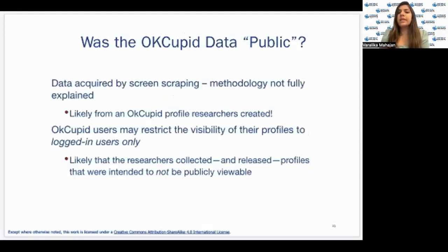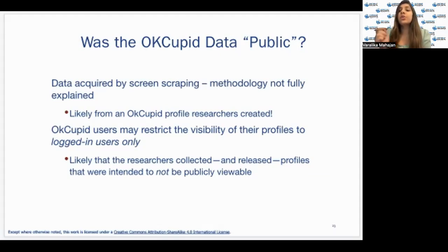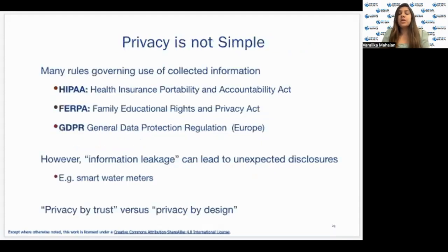Was the OkCupid data actually public? The answer is no. OkCupid users may have restricted the visibility of their profiles to logged-in users only. For example, even with our Instagram profiles, we have control — we can set it to publicly available to everyone, or set it to private and only accessible to those we approve. So this data, when made publicly available, was a breach of privacy.